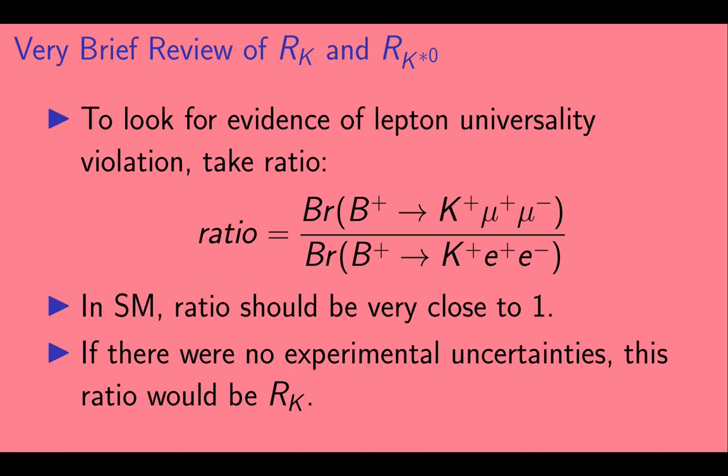A branching fraction is just the fraction of the time that a particle decays in that particular way. So in the numerator, we have the branching fraction for a B plus to go to K plus mu plus mu minus. And in the denominator, we have the branching fraction of the same B plus meson to K plus E plus E minus. In the standard model, this ratio is very close to one. And if there were no experimental uncertainties, this ratio would be RK.